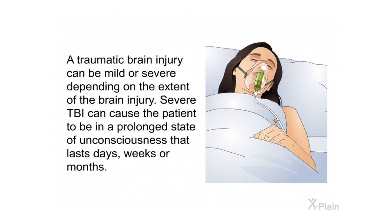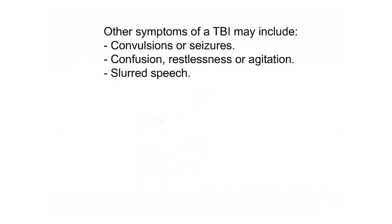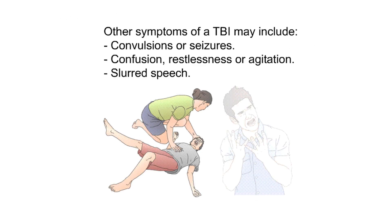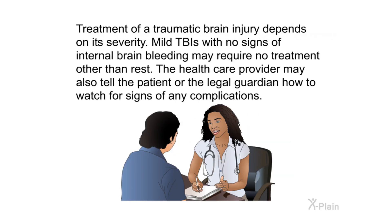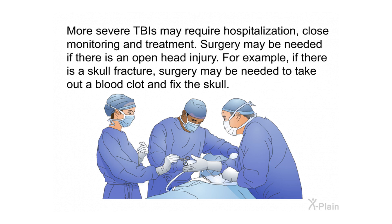A traumatic brain injury can be mild or severe; severe TBI can cause prolonged unconsciousness lasting days, weeks, or months. Other symptoms include convulsions or seizures, confusion, restlessness or agitation, and slurred speech. Treatment depends on severity: mild TBIs with no signs of internal bleeding may require only rest, while more severe TBIs may require hospitalization, monitoring, and surgery — for example, to remove a blood clot and fix the skull in the case of a skull fracture.